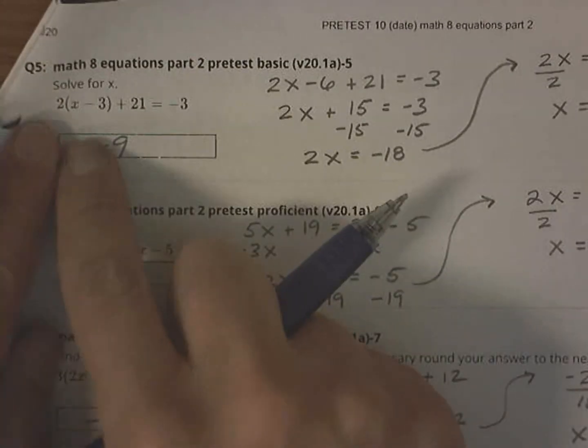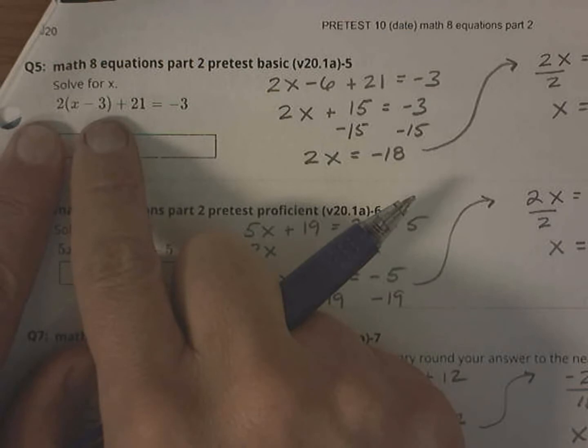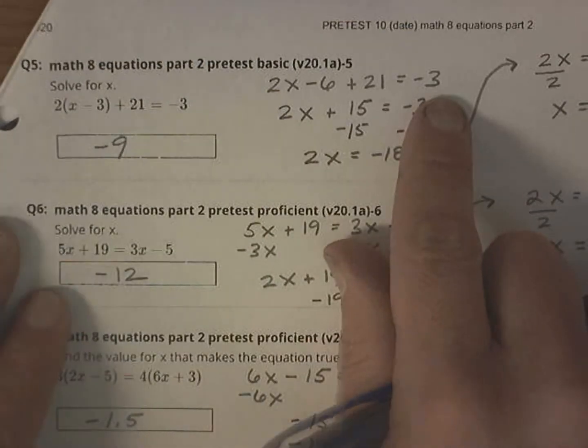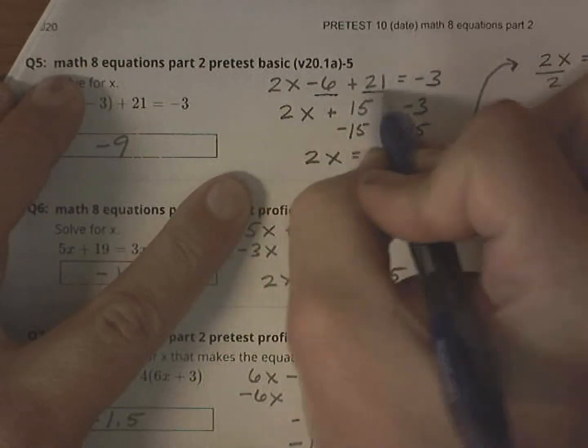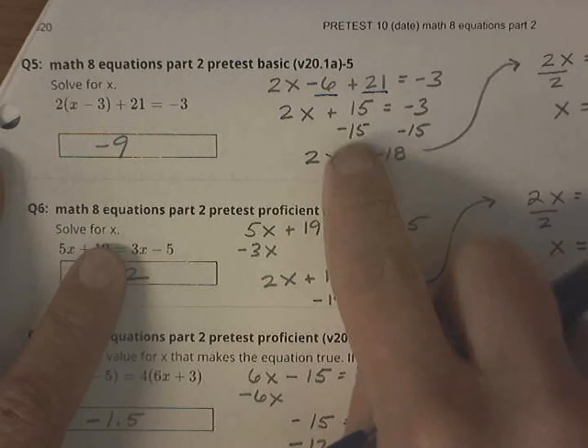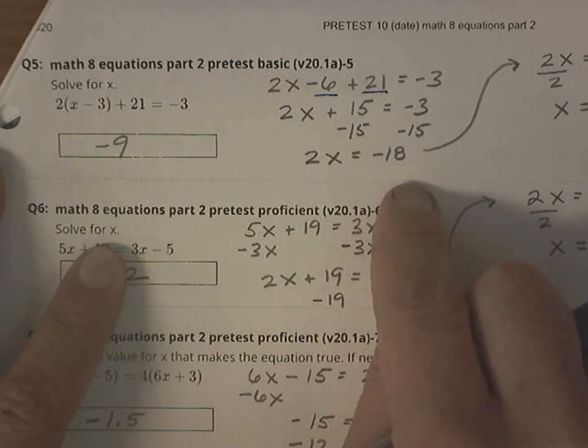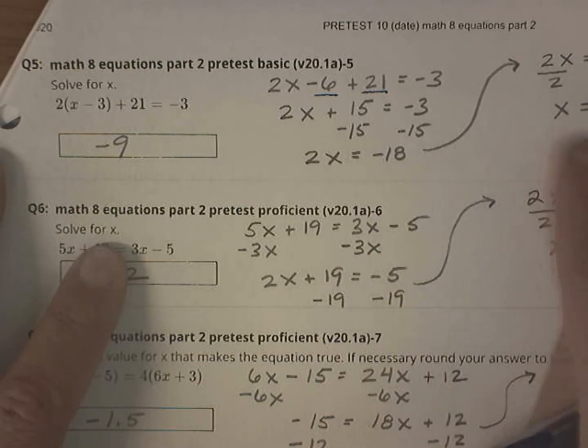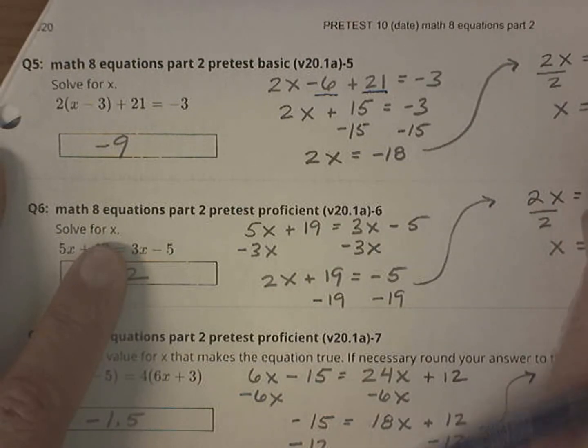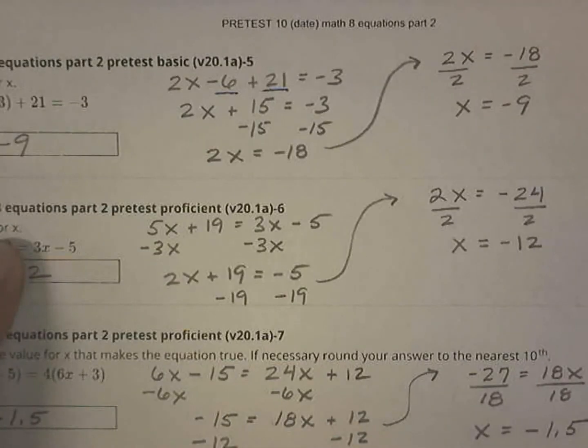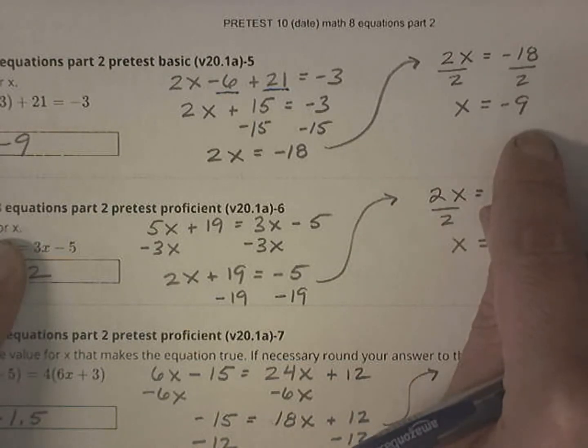Right here, I started with some distribution. So I have 2x minus 6 plus 21 equals negative 3. Then I combined these two terms. The 21 and the negative 6 becomes a 15. Subtracting 15 from both sides gives me 2x equals negative 18. Same sign, add and keep. Dividing both sides by 2. Negative 18 divided by 2 is negative 9, because a negative divided by a positive is a negative. Negative 9 is my answer, and you can't see what I'm doing. Dividing both sides by 2 gives me a negative 9.